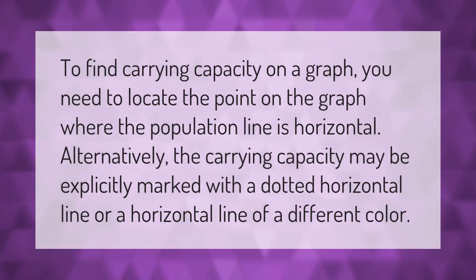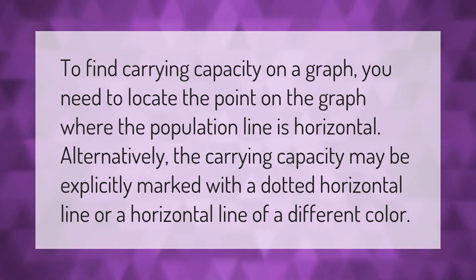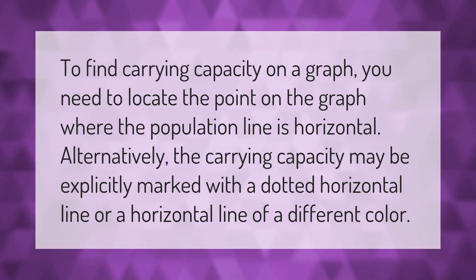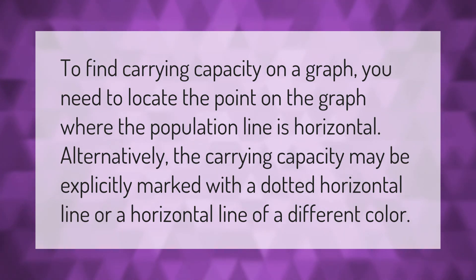To find carrying capacity on a graph, you need to locate the point on the graph where the population line is horizontal. Alternatively, the carrying capacity may be explicitly marked with a dotted horizontal line or a horizontal line of a different color.